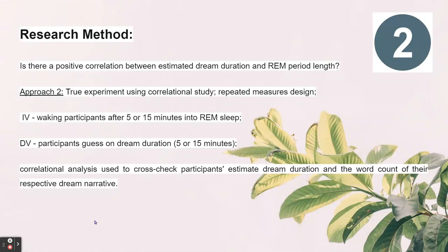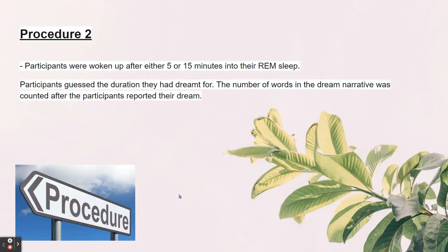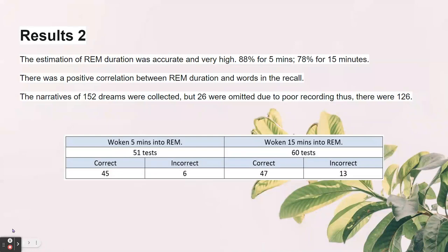Correlational analysis was used to cross-check participants' estimated dream duration and the word count of their dream narratives. Participants were woken up after either 15 or five minutes into their REM sleep and guessed the duration they had dreamt. The results showed estimation of REM duration was very accurate — 88% for five minutes and 78% for 15 minutes. There was a positive correlation between REM duration and words in recall. Narratives of 152 dreams were collected but 26 were omitted due to poor recording, leaving 126.